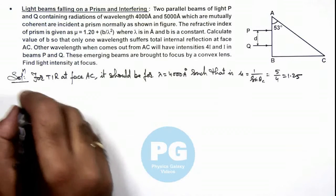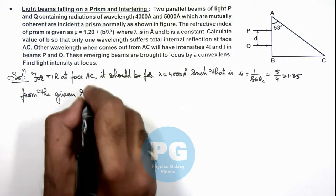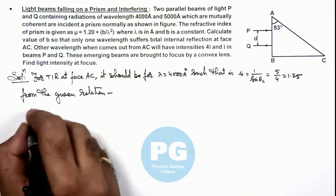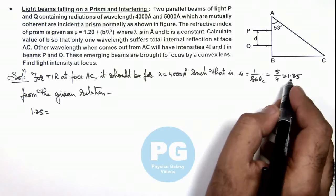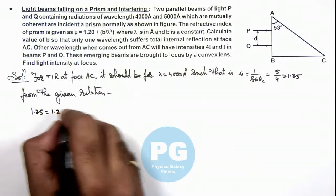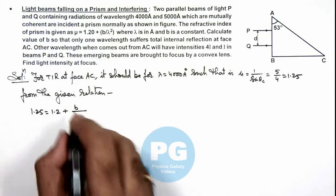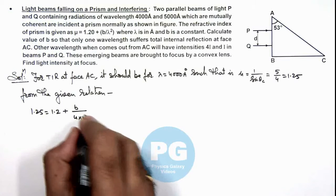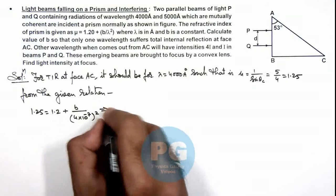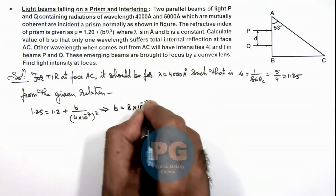Now we can write from the given relation, here we can write 1.25, which is the refractive index for the light of wavelength 4000 angstrom. Here we can write 1.2 + b/λ² and we can substitute the value of λ. So here it is (4×10⁻⁷)². On simplifying this expression will get the value of b which is 8×10⁻¹⁵.